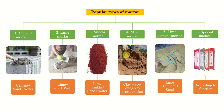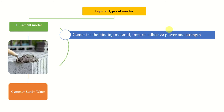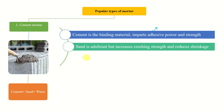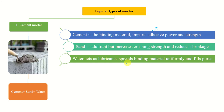Cement is the binding material and it imparts adhesive power and strength. Adhesive power means the power of bonding to different materials; cohesive means bond between same materials. Sand is an adulterant but increases crushing strength and reduces shrinkage — it has to be used in the correct proportion. Water acts as a lubricant, spreads the binding material uniformly, and fills the pores.